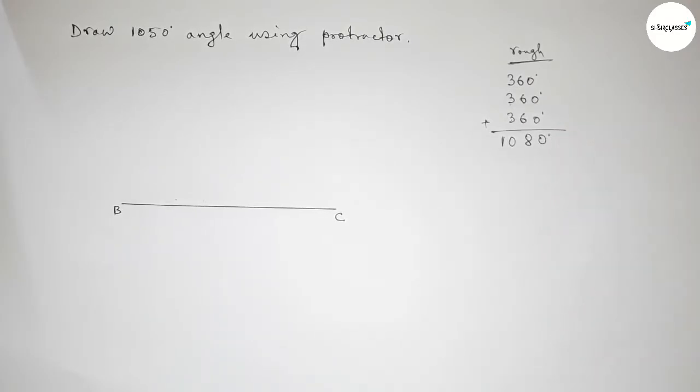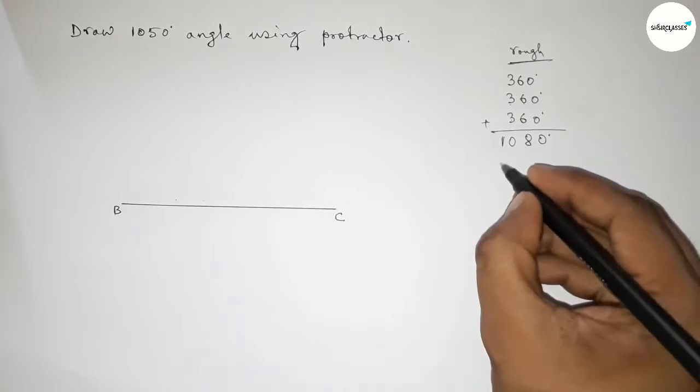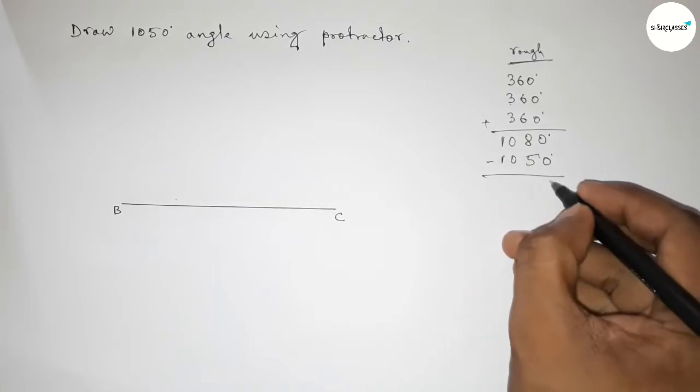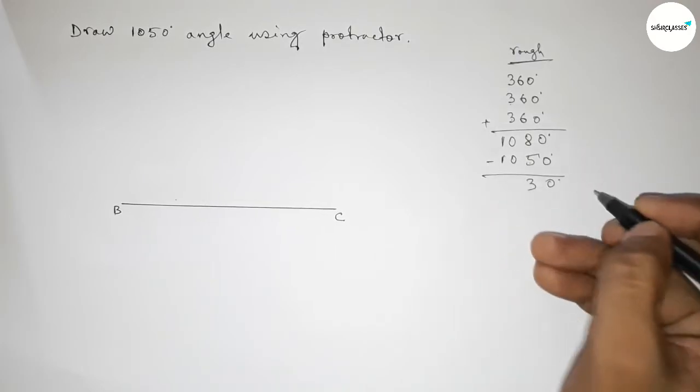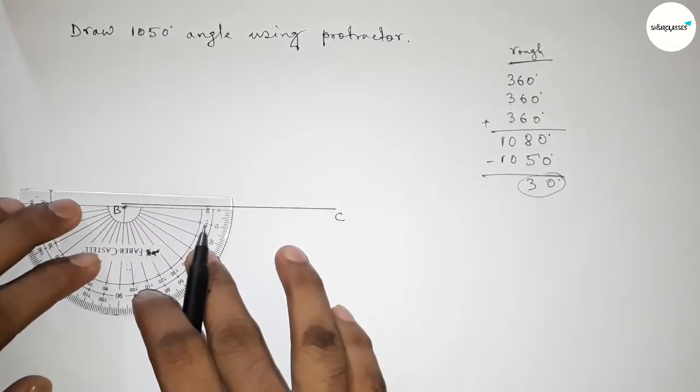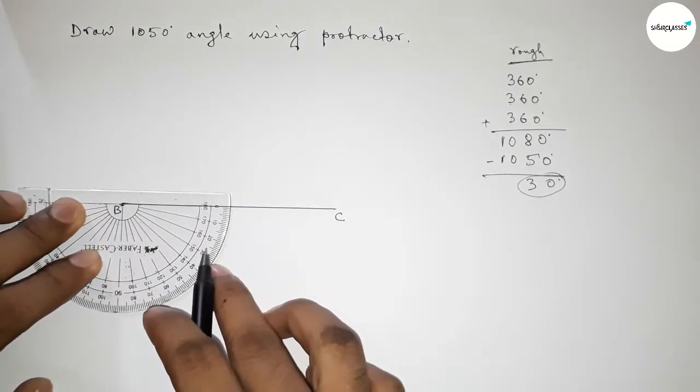So 1080 degrees. Now subtracting 1050 degrees, so then we can get 30 degrees. So first we have to draw a 30 degree angle on the point B by using protractor and putting the protractor on the point B by this way.